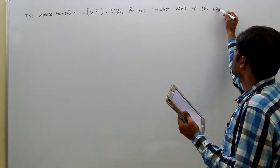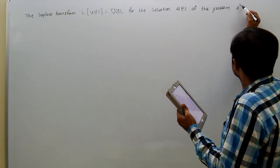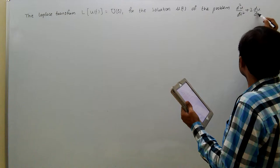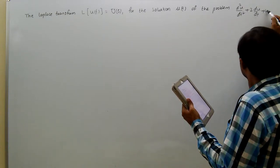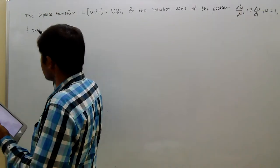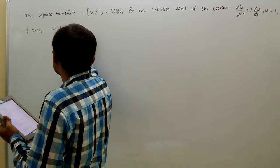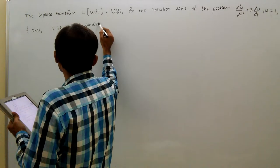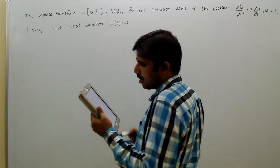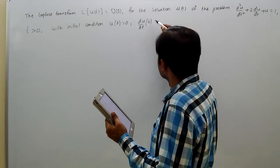d squared u by dt squared plus 2 du by dt plus u equal to 1, t greater than 0, with initial condition u of 0 equal to 0, and du by dt of 0 equal to 5.